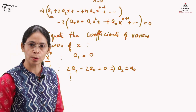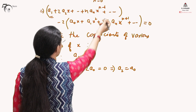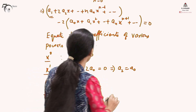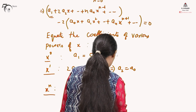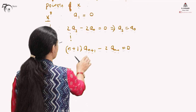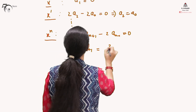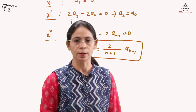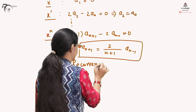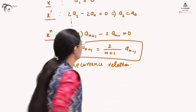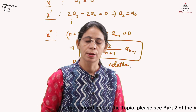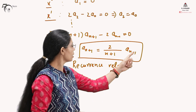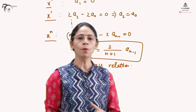Equating the coefficient of x^n, we get: (n+1)·a_{n+1} - 2·a_{n-1} = 0. So a_{n+1} = (2 / (n+1)) · a_{n-1}. This is called the recurrence relation, which will be used to find out the values of all the coefficients. We can substitute the values for n = 1, 2, 3 and so on. Note this starts from n equals to 1.